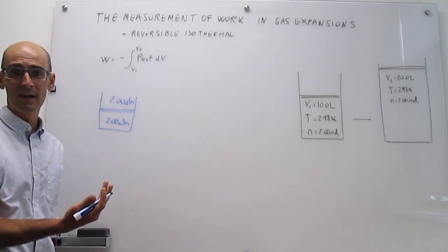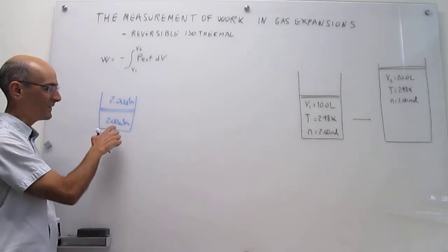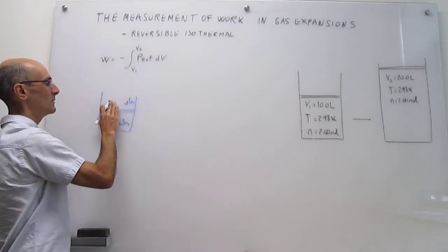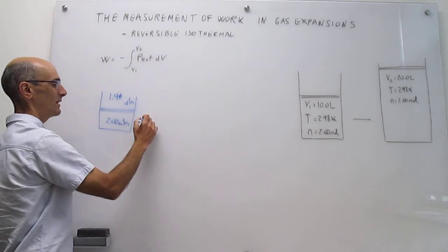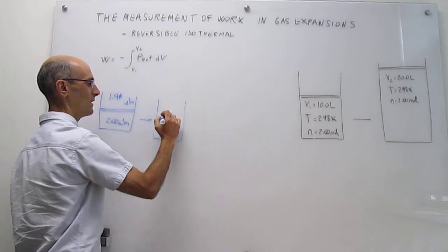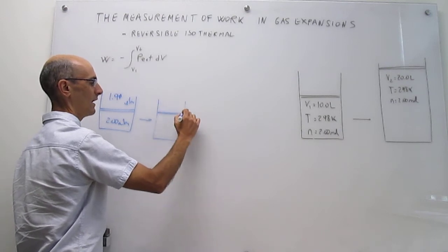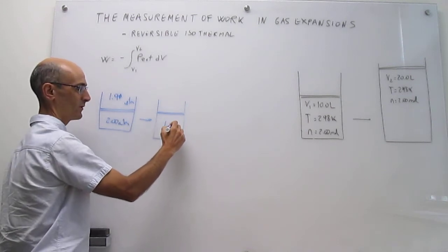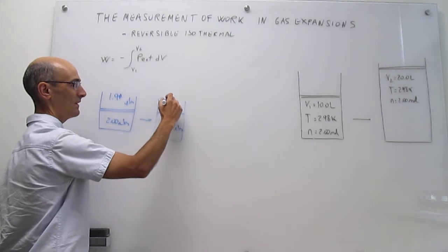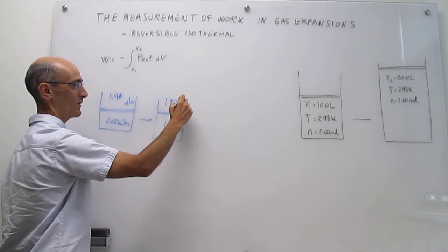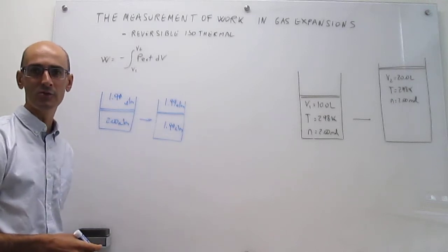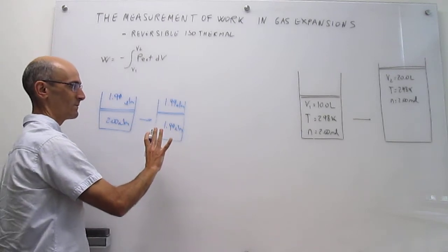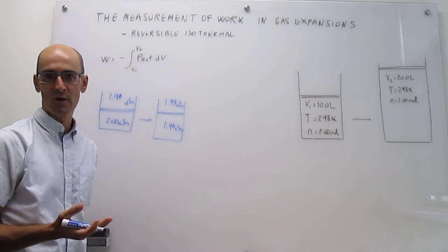Instead, what you have to do is make the external pressure a little bit less than the internal pressure so that you can actually carry out the expansion. For example, suppose you make it 1.99 atmospheres — in that case you can carry out the expansion. But the expansion would happen only until the volume increases by just a little bit, so that the pressure drops to 1.99 atm and reaches the external pressure, and that's the end of the expansion. We'd like to expand this macroscopically to extract a significant amount of work.